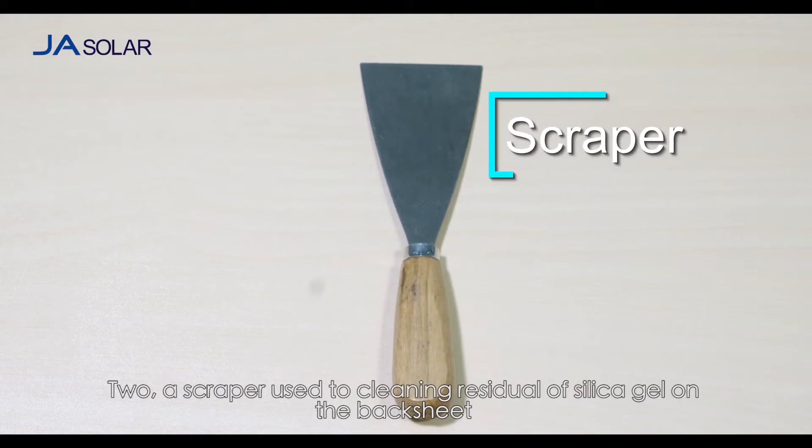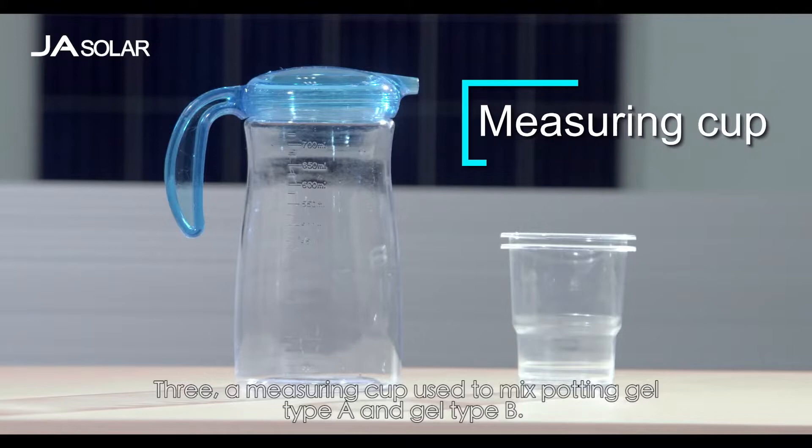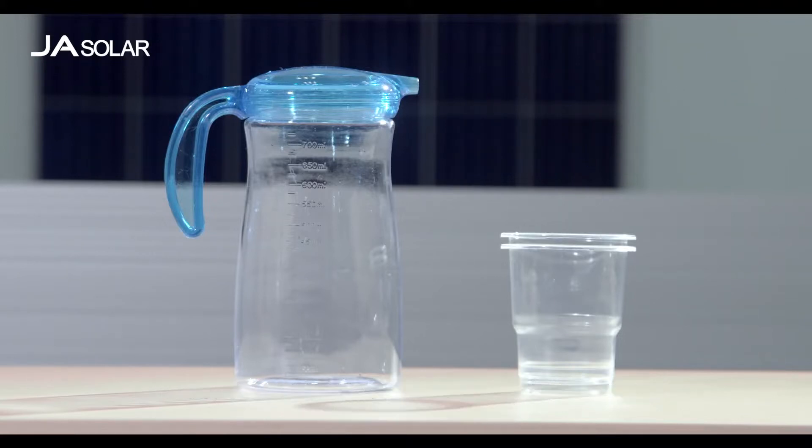Second, a scraper used to clean residual silica gel on the back sheet. Third, a measuring cup used to mix potting gel type A and gel type B.